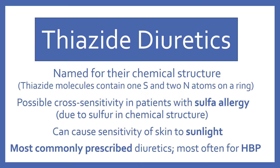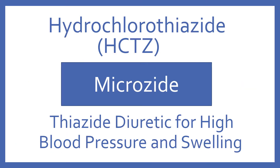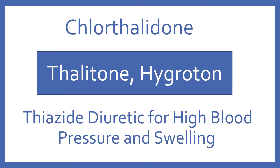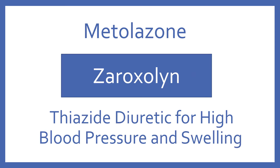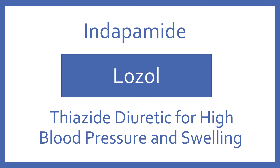Specific thiazide medications include: Hydrochlorothiazide (HCTZ), brand name Microzide, for high blood pressure and swelling. Chlorthalidone, brand name Thalatone or Hygroton, for high blood pressure and swelling. Metolazone, brand name Zaroxolyn, for high blood pressure and swelling. And indapamide, brand name Lozol, for high blood pressure and swelling.